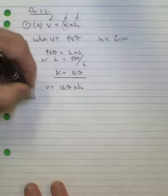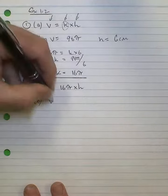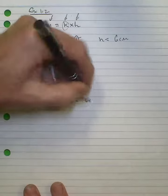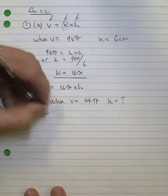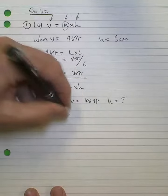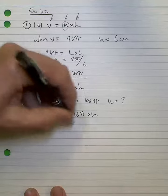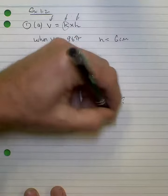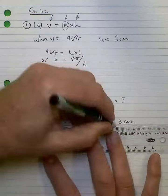Now in part b, what happens when the volume is halved? So when the volume is equal to 48π, what becomes of the height? So when we do division,